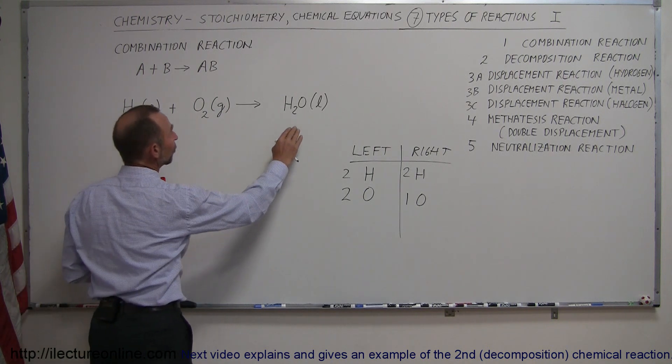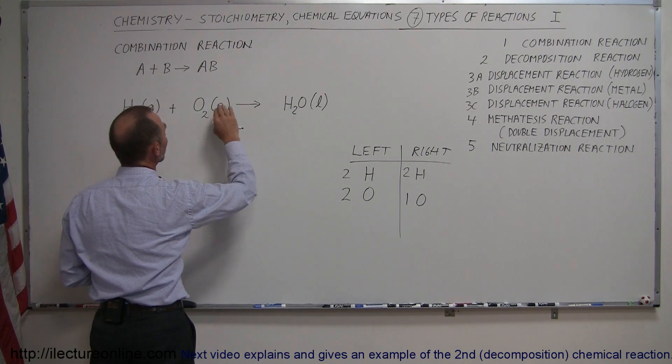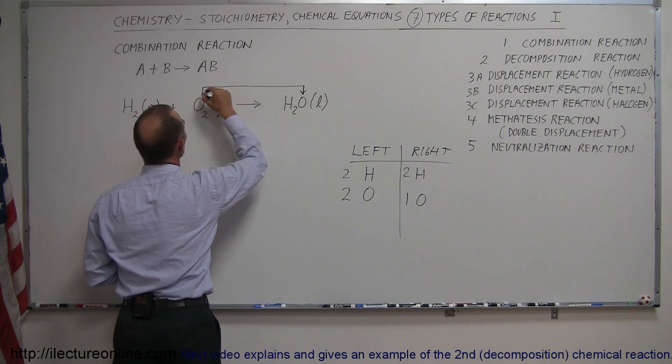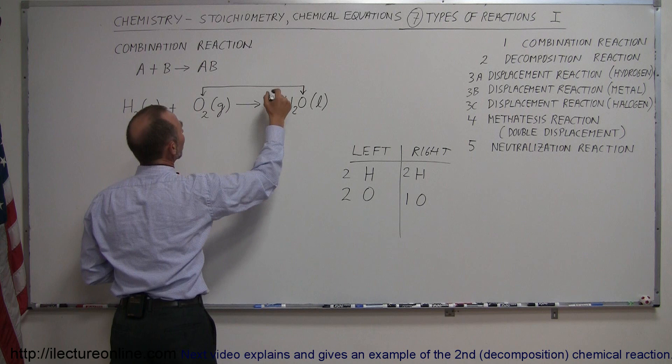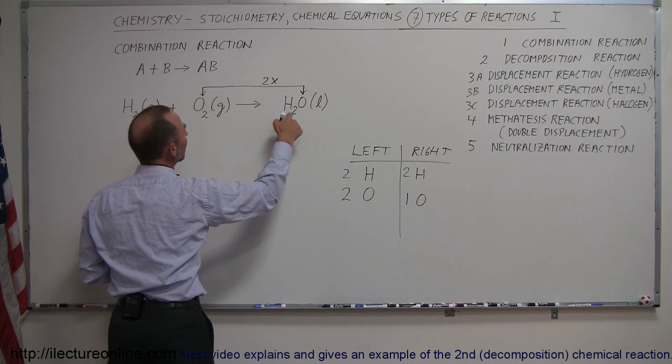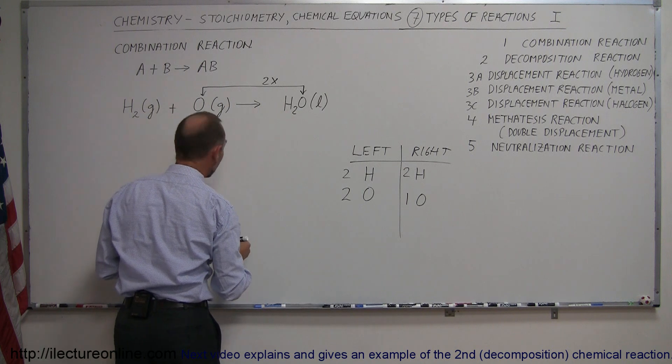To have that balance, we need to have just as many oxygens on the right as we do on the left. So, the first thing I'm going to do is take a look at the oxygens. Notice that I need twice as many in order to have these balanced.